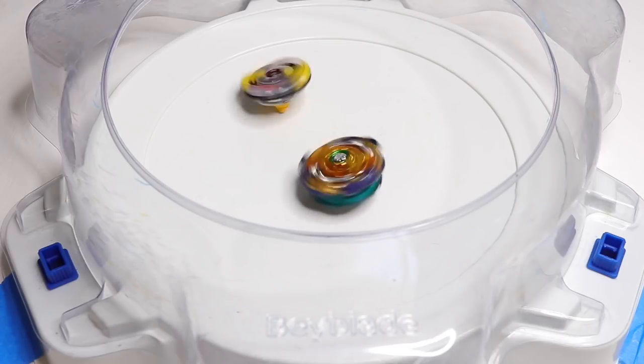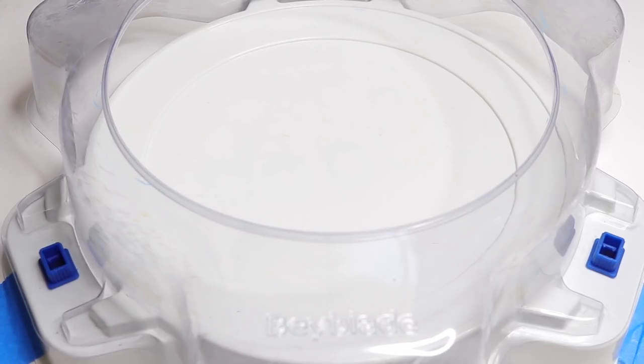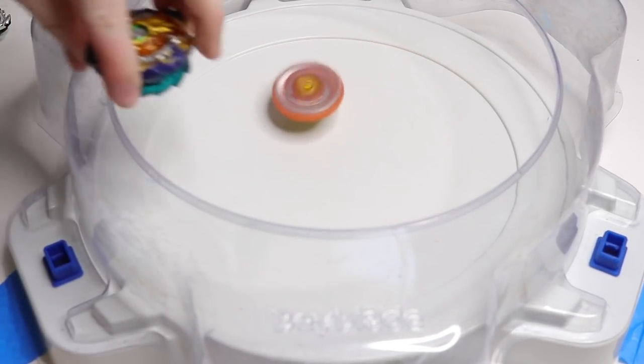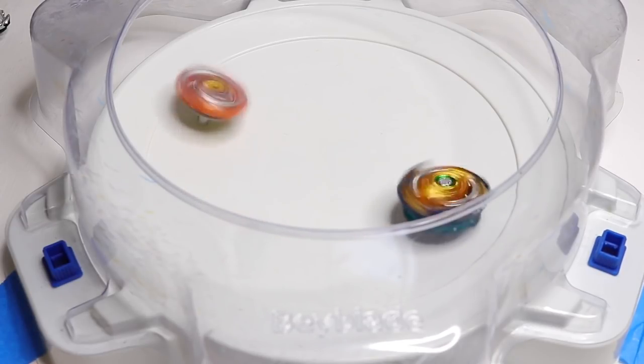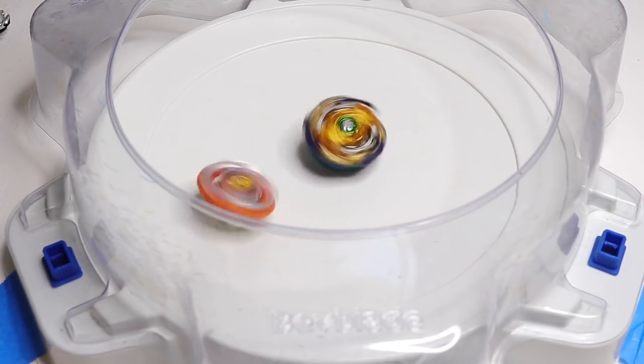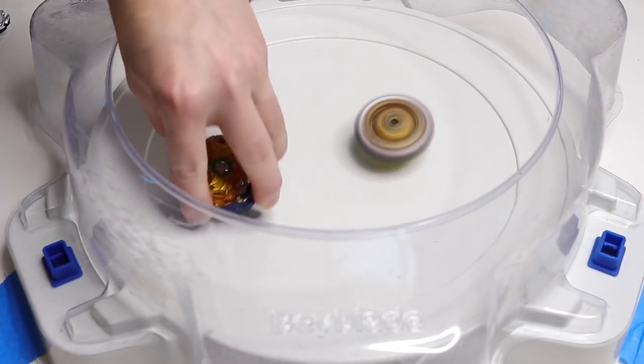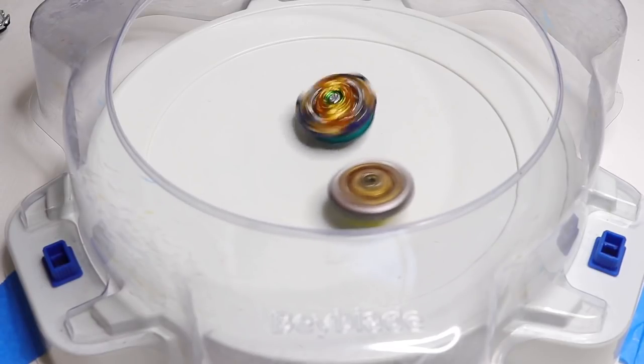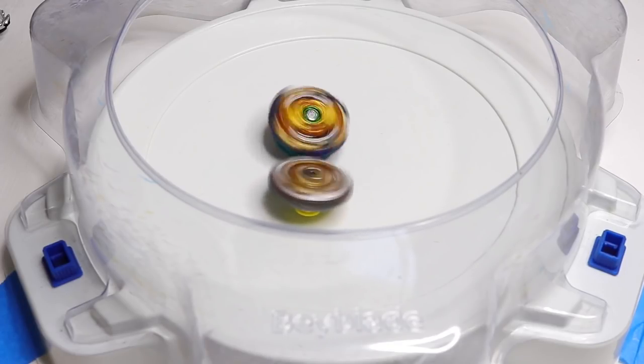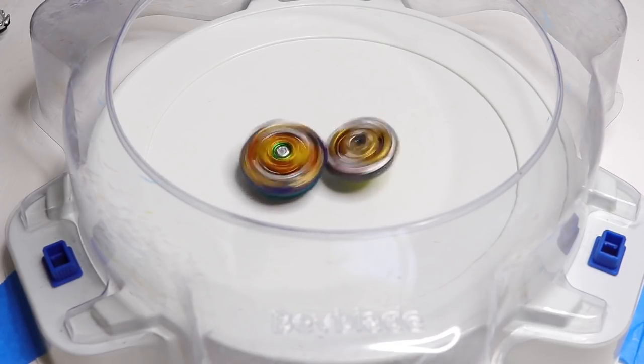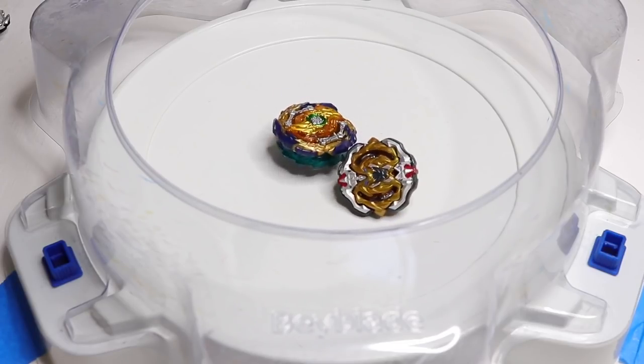First, here we go. Fafnir wins. Now, Orb Hercules. This is going to be a hard one. All right, who's got more stamina from a hand spin? Draw.